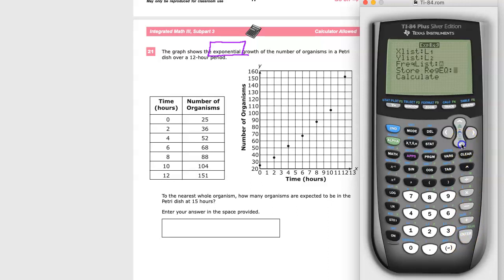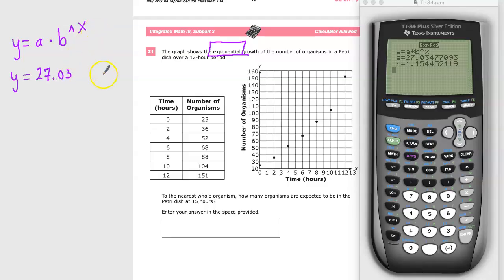You can actually store the regression equation if you want. I'm not going to because I have a piece of paper or a virtual piece of paper anyway. And now I can just hit calculate. It'll give me an amount. It shows me the exponential equation a times b to the x power. And then y is equal to our a is 27.03, some around in there. And then times our b value of 1.15.